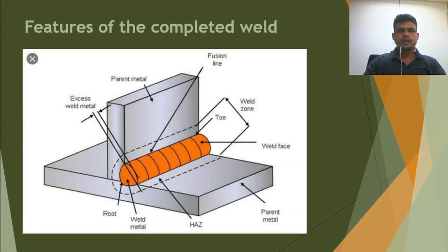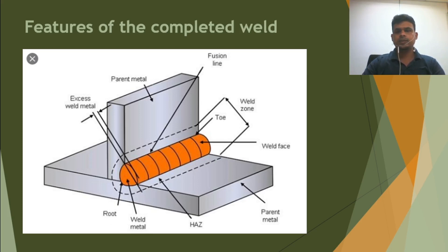In the next picture you can see the fillet weld configuration — this is the completed fillet weld. From here also it's the same: parent metal, fusion line, weld zone, toe, weld face, weld metal, root, excess metal. Everything is here. I will try to explain each one by one.